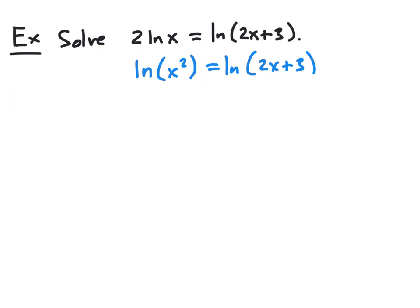Now we have the appropriate form: log of something equals log of something else, and the logs are the same base — in this case base e, the natural logarithm. Using the one-to-one property, we can conclude that x squared must equal 2x plus 3.